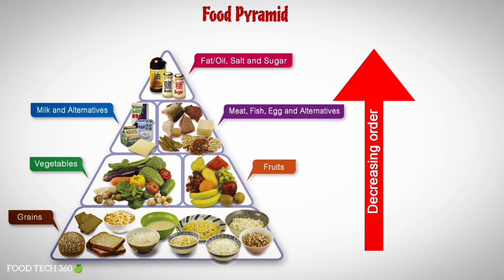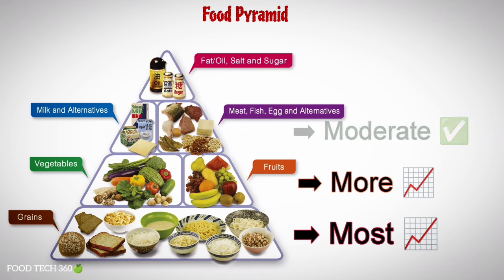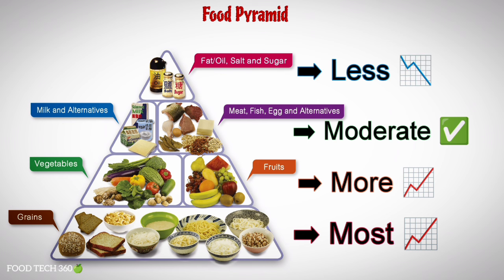This is made on the basis of amount of intake in decreasing order when read from bottom to top. So based on this concept, grains should be taken the most, eat more fruits and vegetables, have a moderate amount of meat, fish, egg, milk and their alternatives, and finally eat less fat or oil, salt and sugar.